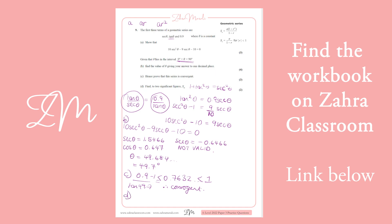Now for part D, you're just sticking into the sum to infinity formula, which you're given in the formula book. We know that A is sec theta, so we can do 1 divided by cos 49.7, which gives me 1.546, divided by 1 minus my R, 0.7632. So 1 minus 0.7632.